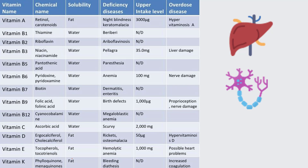Most importantly, based on previous examination papers, vitamin B7 is frequently asked. The chemical name of vitamin B7 is biotin. Vitamin C's chemical name is ascorbic acid — this has also been asked in many state exams. Deficiency of vitamin C causes scurvy. Vitamin B9 is folic acid, and its deficiency causes birth defects. Vitamin D deficiency causes rickets. Vitamin E deficiency causes hemolytic anemia.